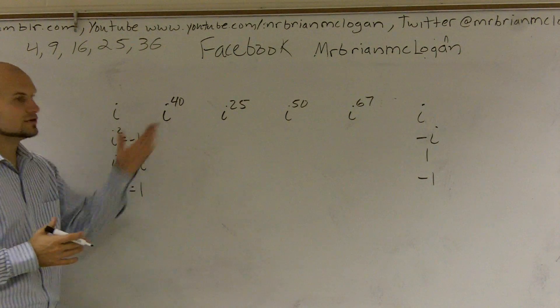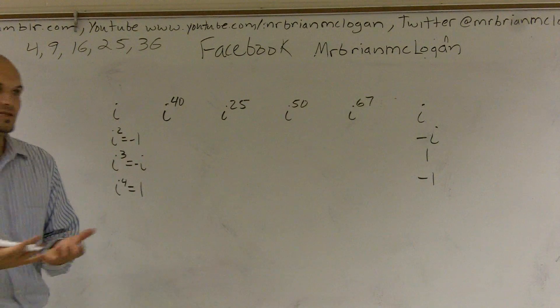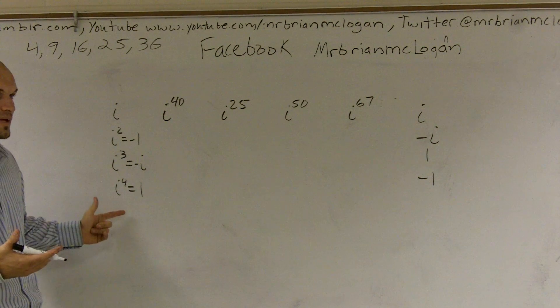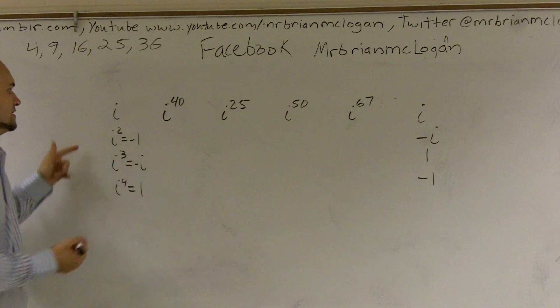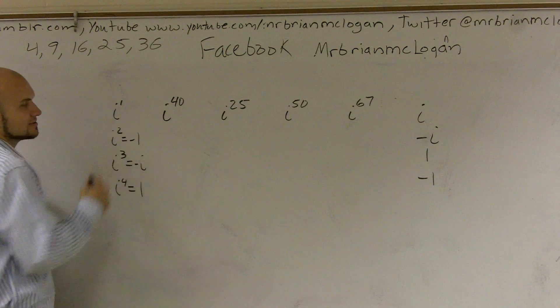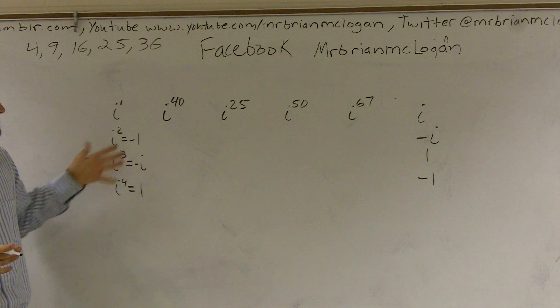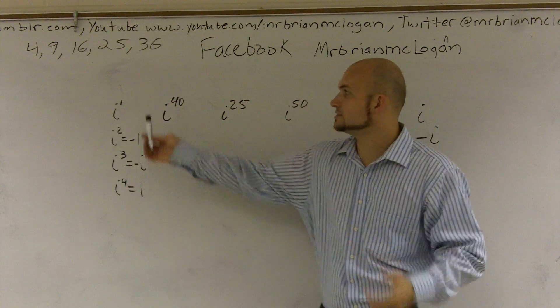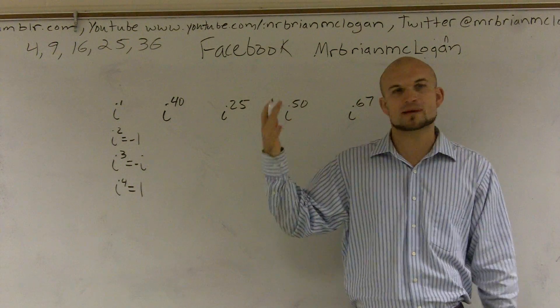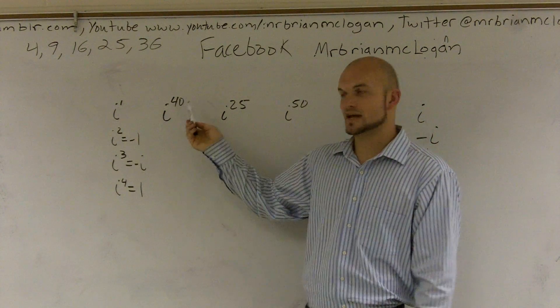So what we need to do is we need to determine what exactly are we going to have? We have four options we can have. So since we have four options, what we're going to do is think of these as kind of like your remainders. You have one, two, three, and four. So what I'm going to do is I have four options. I'm going to divide them into this exponent, and no matter what my remainder is, it's going to tell me what power I'm going to put it to.